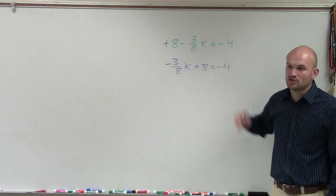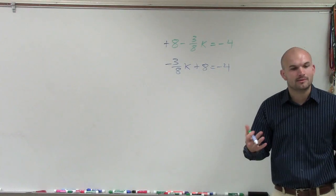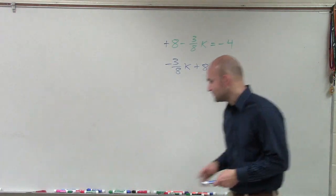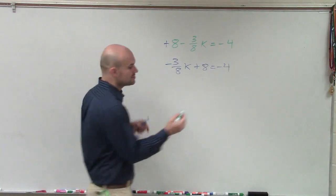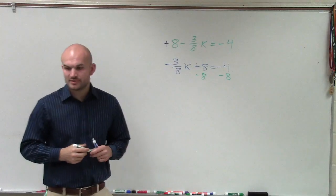It's being added by 8 and it's being multiplied by negative 3/8. So the first thing I need to do is undo addition and subtraction. You notice that my variable is being added by 8, so I'm going to subtract 8 on both sides, which we call the subtraction property of equality.